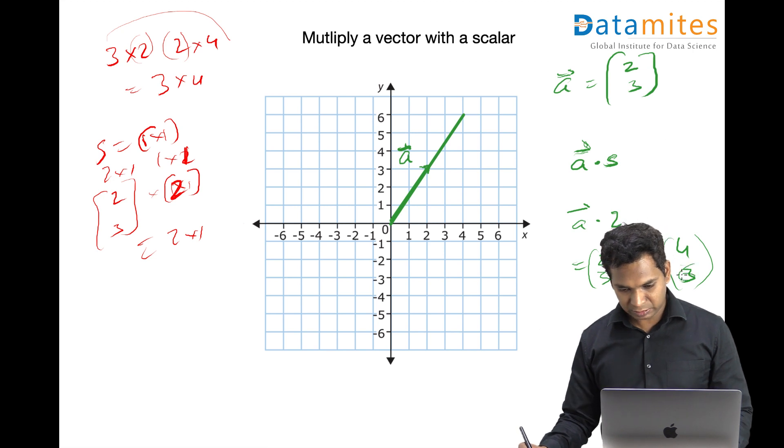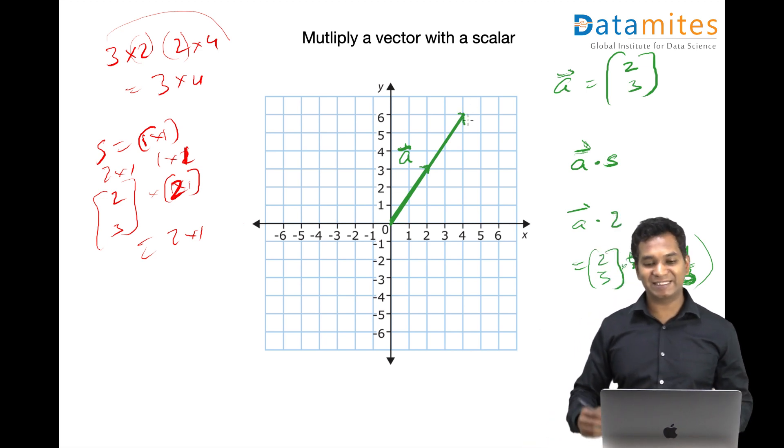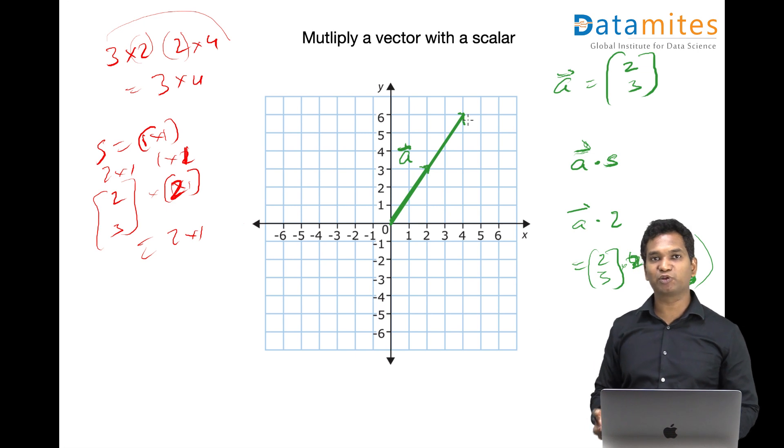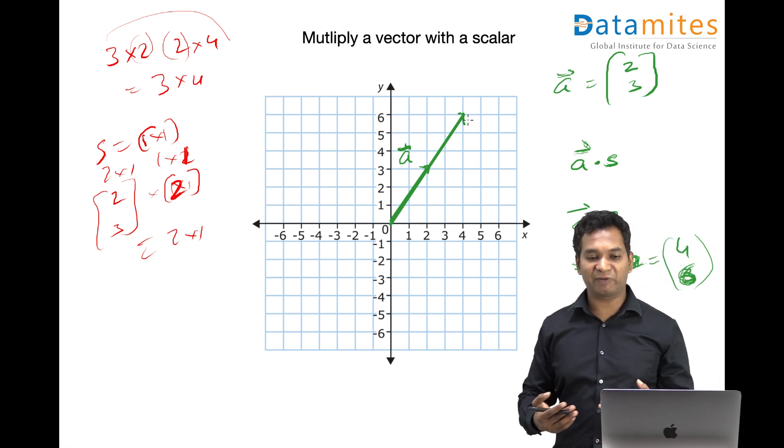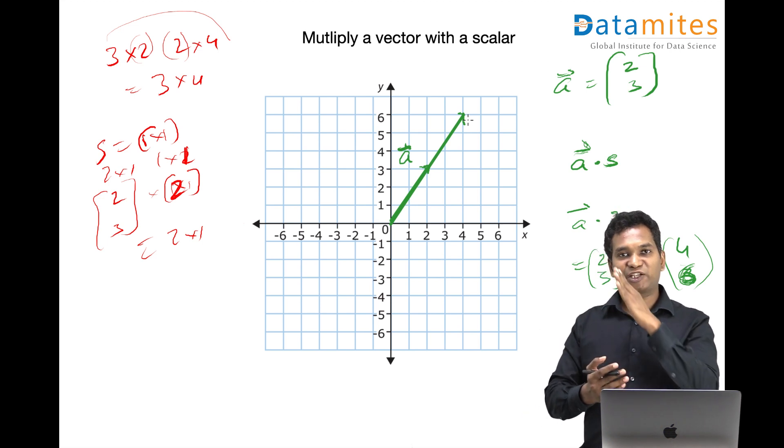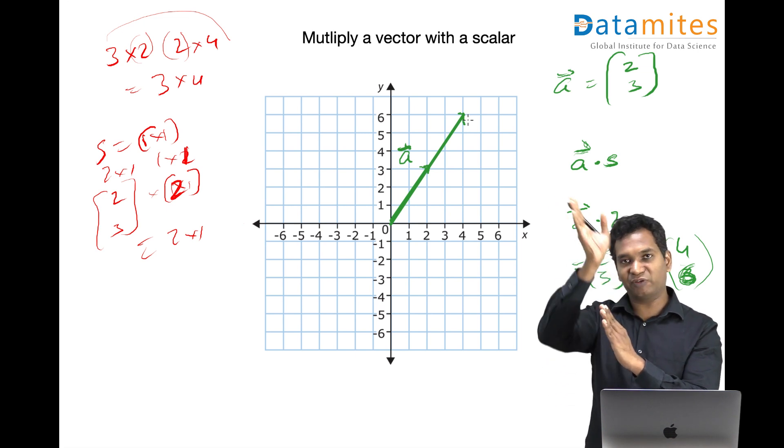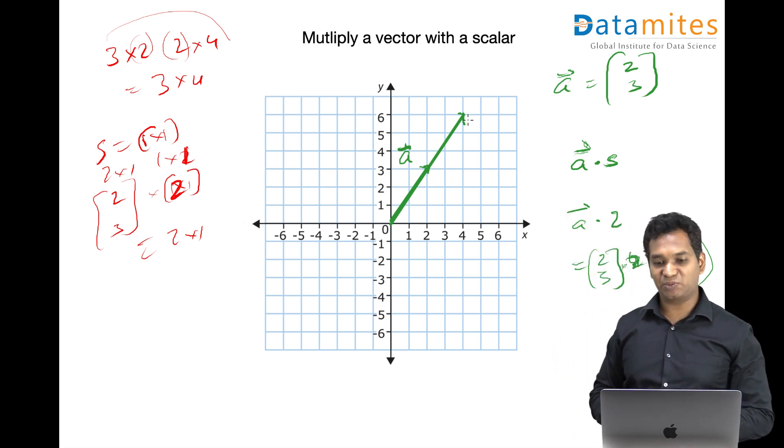So essentially, the direction is not changed; it is the magnitude which is changed. This makes very good sense because a scalar does not have a direction. When we multiply a vector with a scalar, the vector direction remains unchanged, but the magnitude - the size, the length of the vector - increases as per the multiplication value of the scalar.